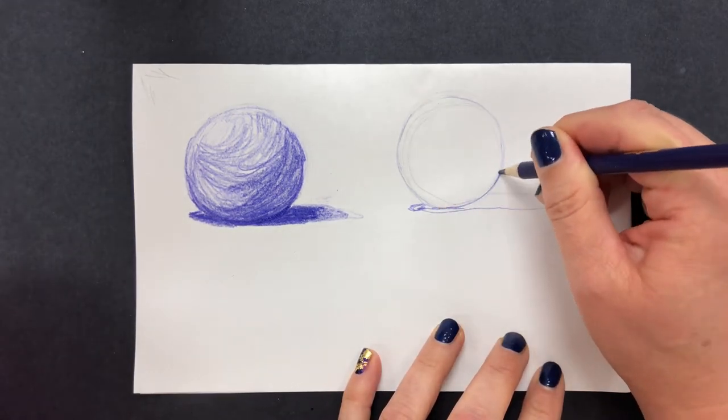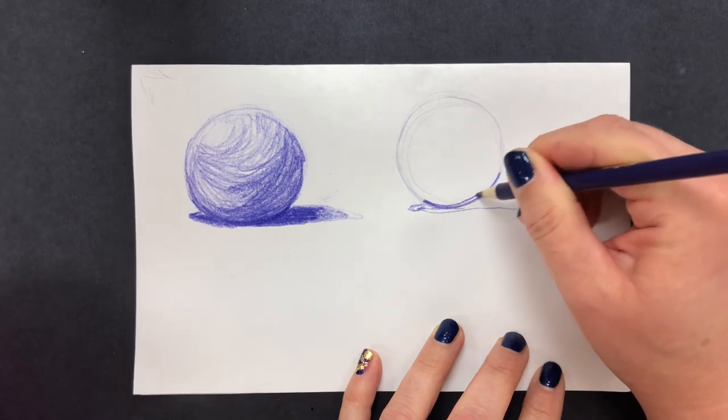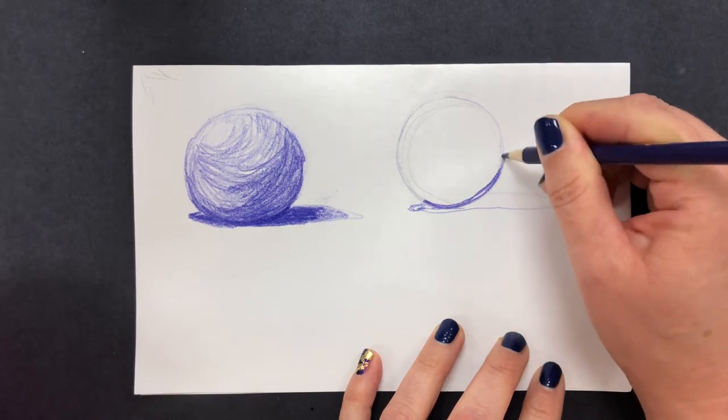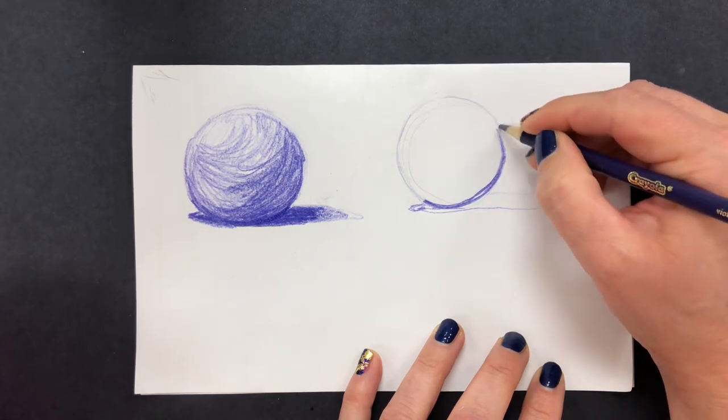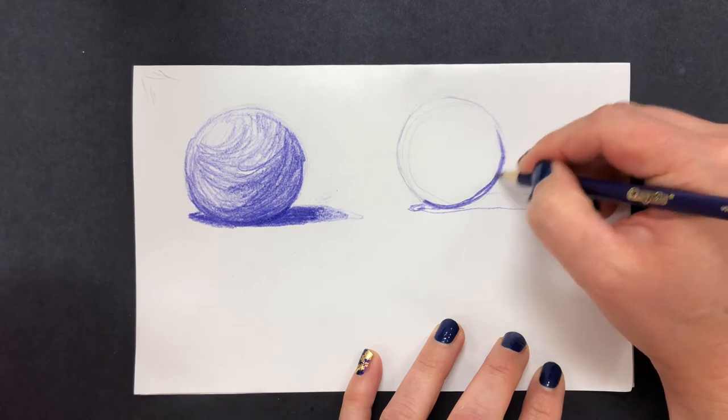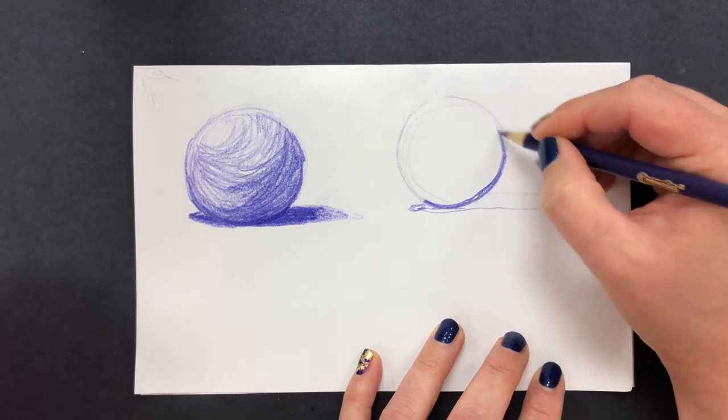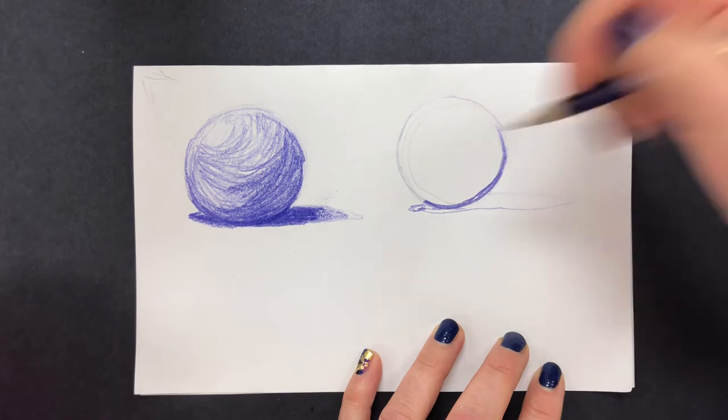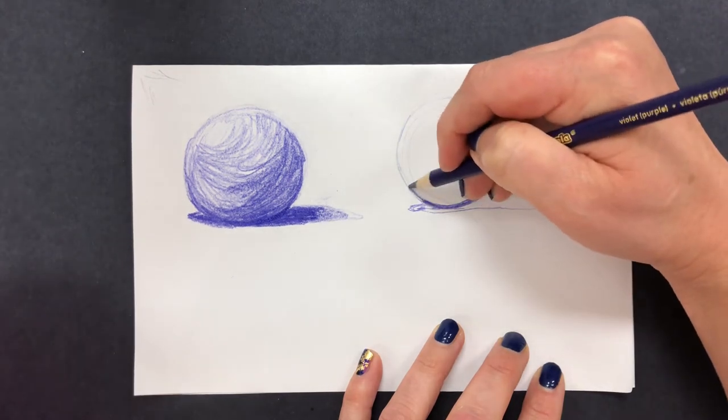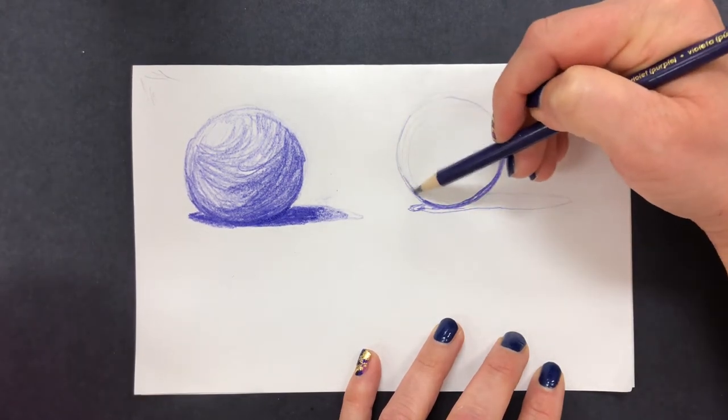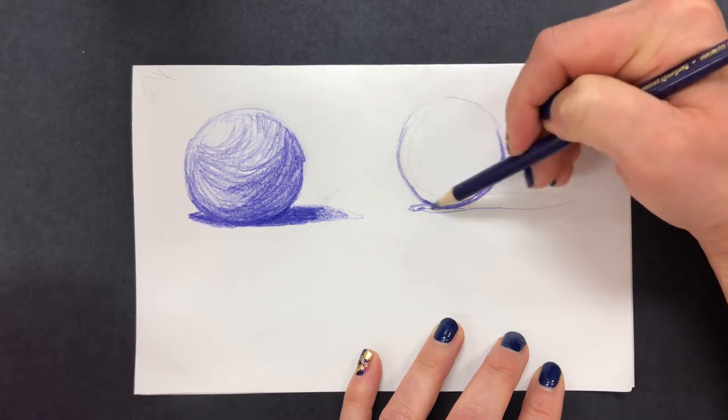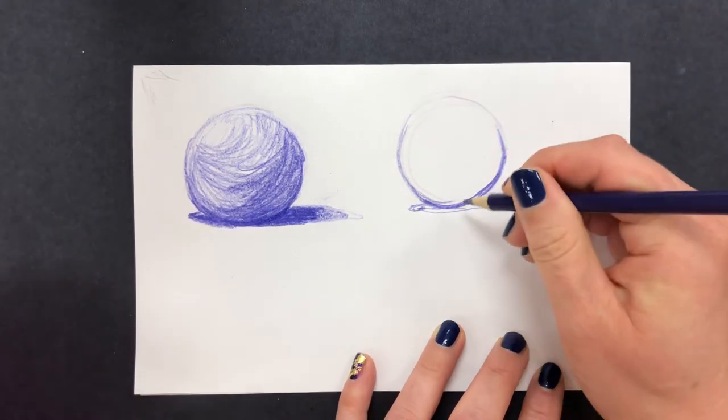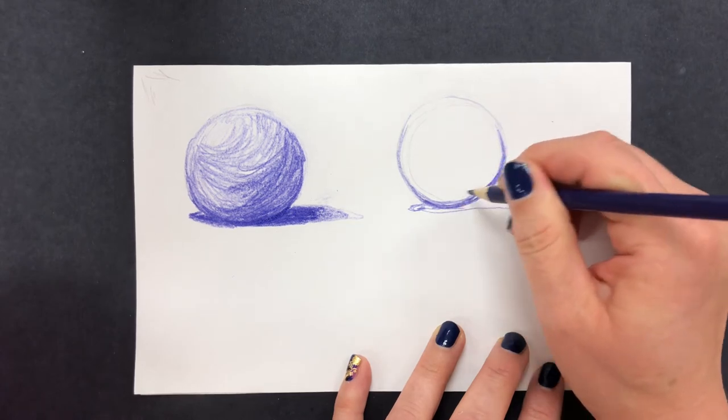Now I'm ready to go ahead and start to darken up this bottom side. You want to lighten a little bit, not quite to the edge, because when a circular object has light shining on it it's going to have a little bit of a glow on the farthest side. You are able to control the color, the value, with the pressure and the number of marks that you make.